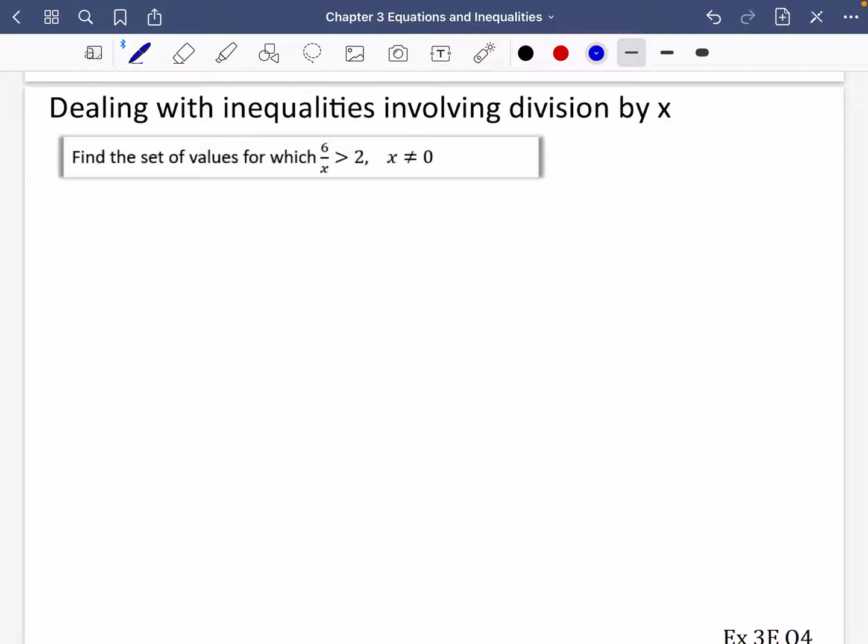So I wanted to talk about a particular type of inequality that involves division by x, because it may be a little bit trickier than it first looks. It says here, find the set of values for which 6 over x is greater than 2. And it says x cannot be equal to 0, otherwise we would have this division by 0, which we know can't be done.